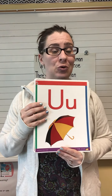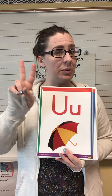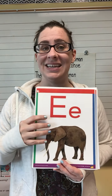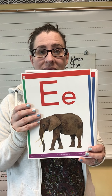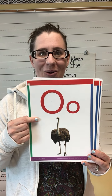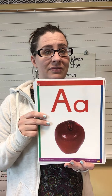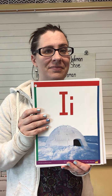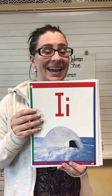Letter is u — sounds are /u/ and /oo/. Letter is e — sounds are /eh/ and /ee/. Letter is o — sounds are /o/ and /ah/. Letter is a — sounds are /ah/ and /ay/. Letter is i — sounds are /i/ and /eye/.